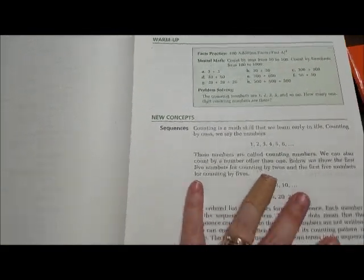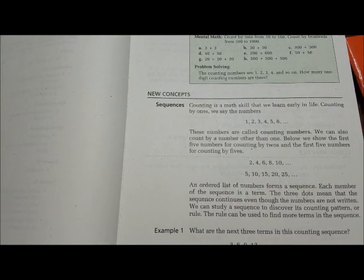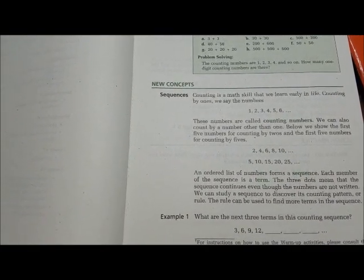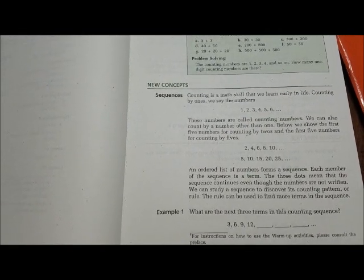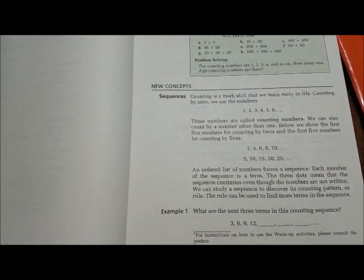So the new concept, or which is just a review concept, is going to be counting as a math skill that we learn early in life. Counting by ones, we say numbers 1, 2, 3, 4, 5, 6. These numbers are called counting numbers.